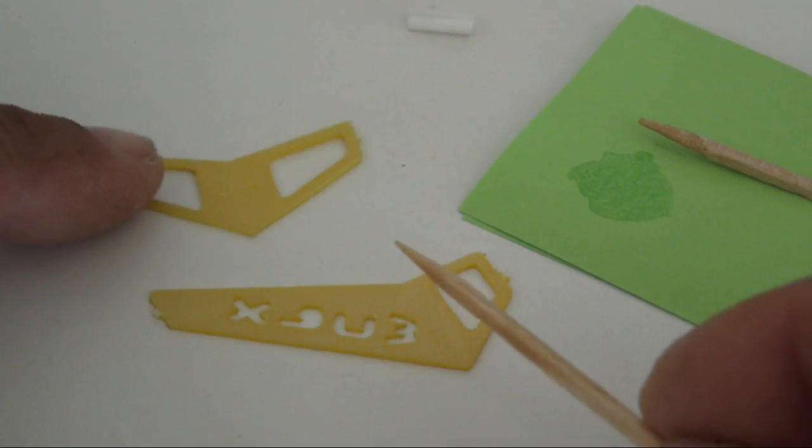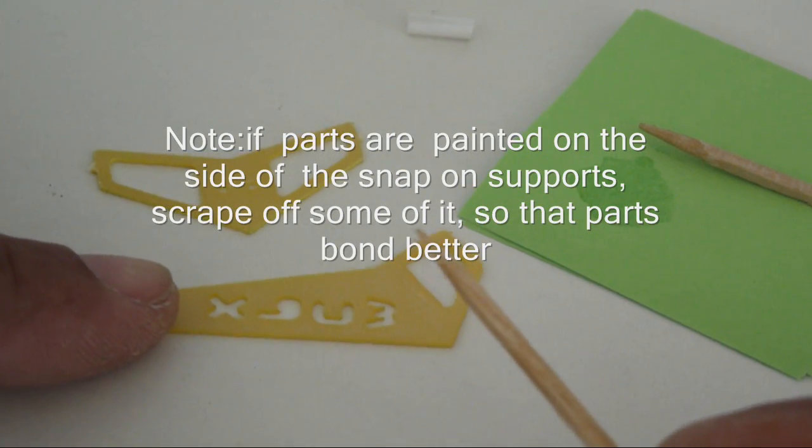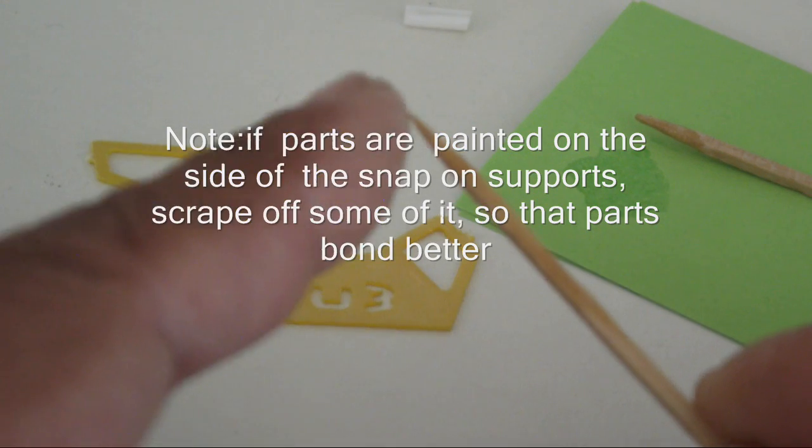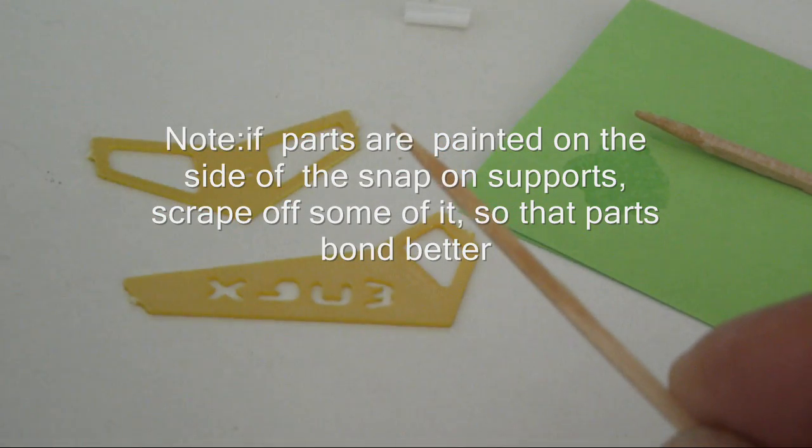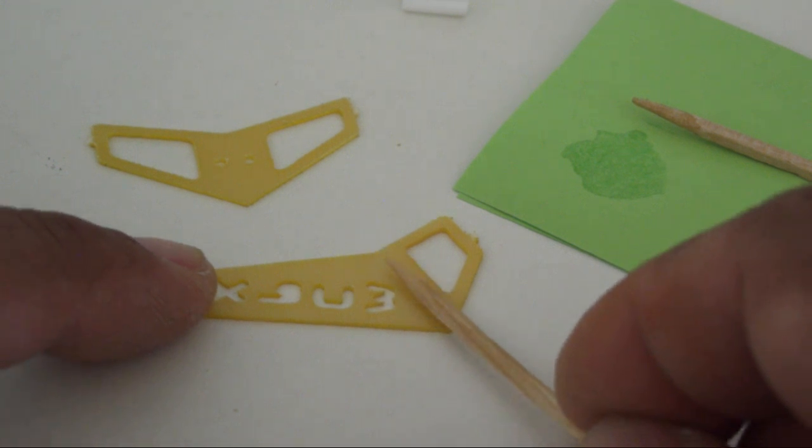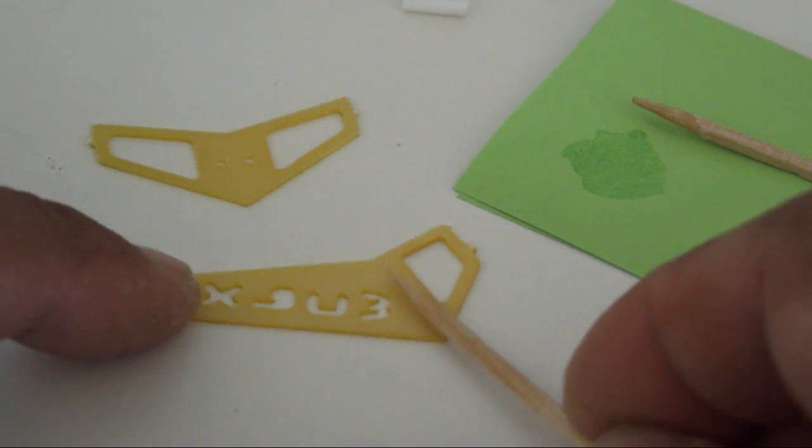Keep notice of the orientation of these parts. Take your CA accelerator toothpick, you have a little bit of CA accelerator on the toothpick end and dab it on the part where you are going to be installing the snap-on plastic supports.